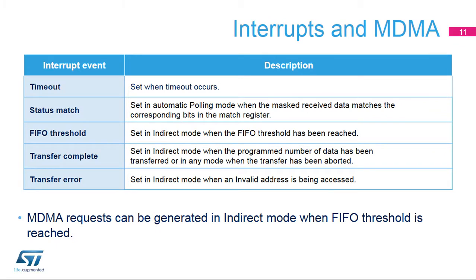The Quad SPI memory interface has five interrupt sources: Timeout; status match, when the masked received data matches the corresponding bits in the match register in automatic polling mode; FIFO threshold; transfer complete; and transfer error. MDMA requests can be generated in indirect mode when the FIFO threshold is reached.